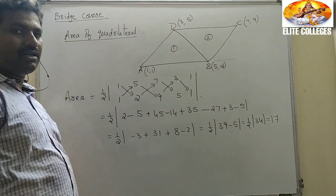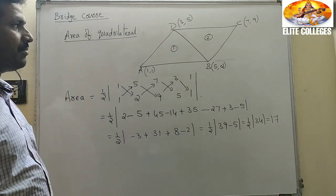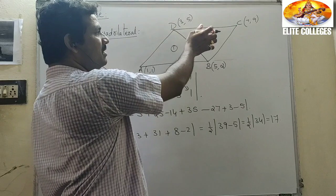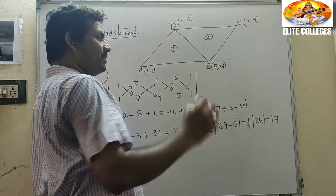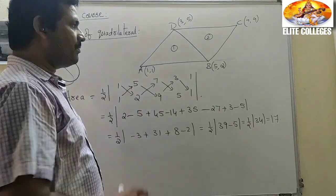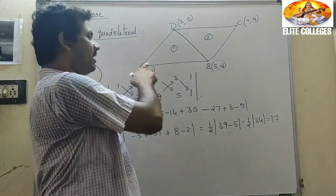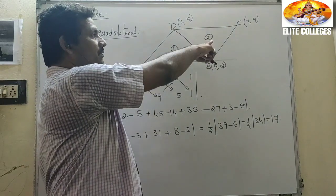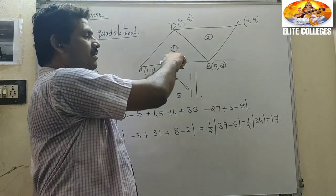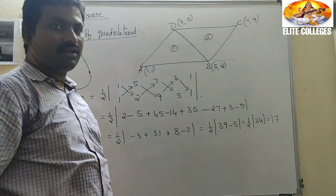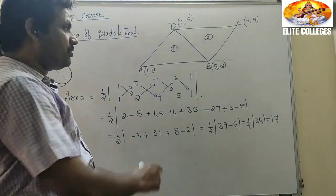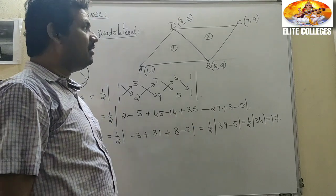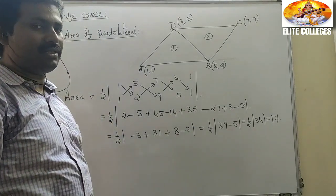That is the area of the quadrilateral found directly. No need to find area of triangle ABD plus area of triangle BCD separately. You can check the answer yourself by adding the two triangle areas — you will get the same value of 17.